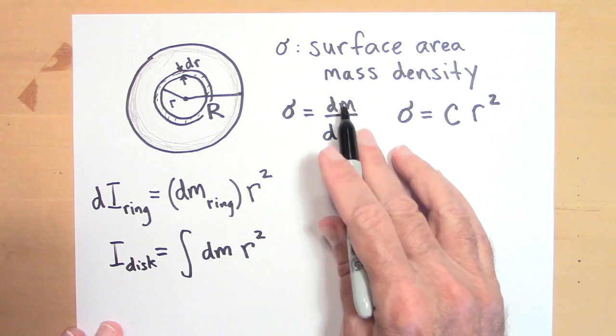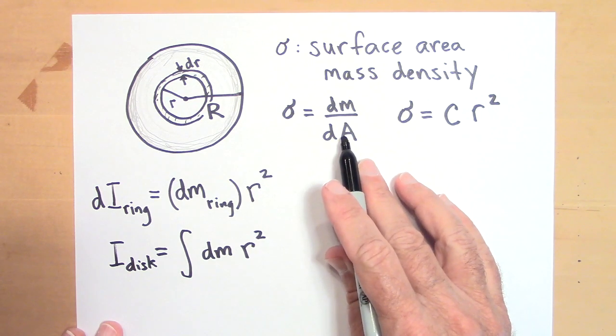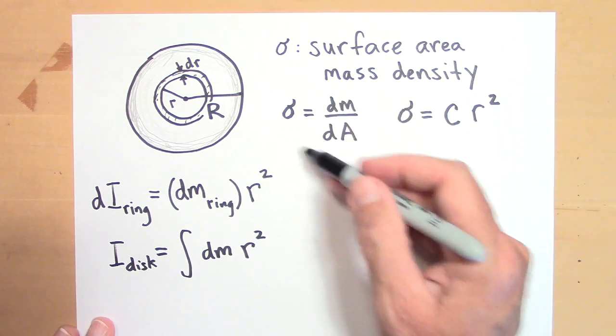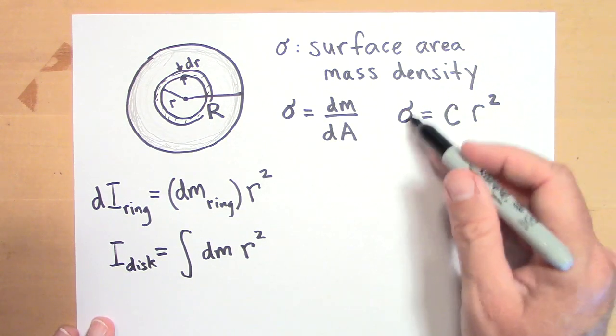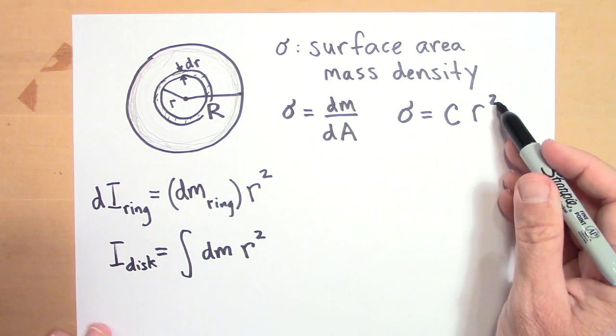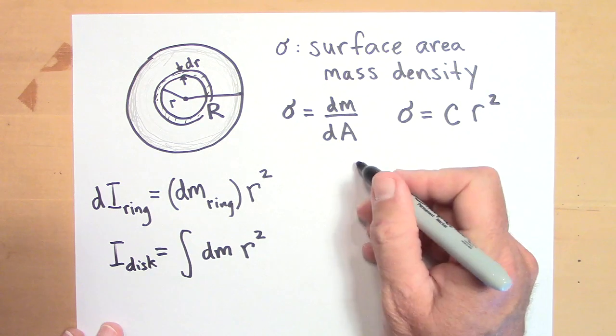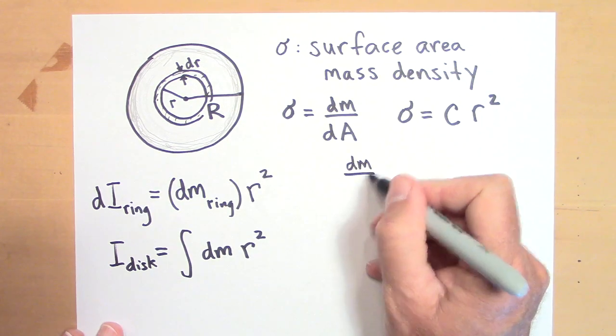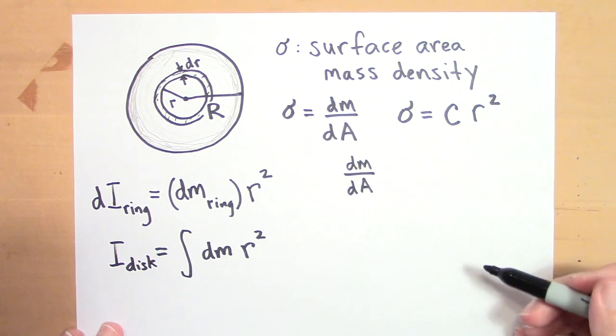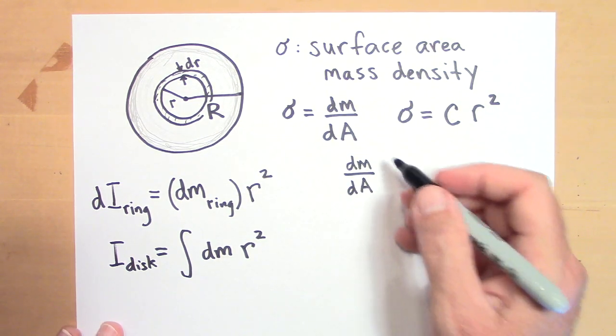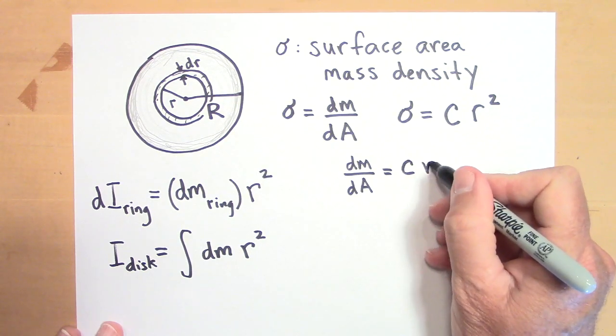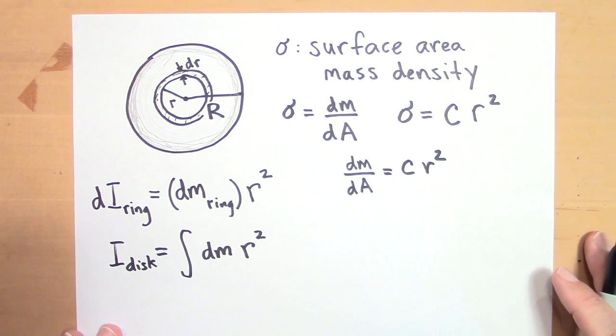I'm going to use this equation dm over dA, that's equal to Cr squared. So this is for any problem, but this is particular to our problem. I just made up that sigma for this problem was Cr squared. Okay. So I'm going to set those two equal to each other, dm over dA. That's the surface area mass density. That's equal to Cr squared.